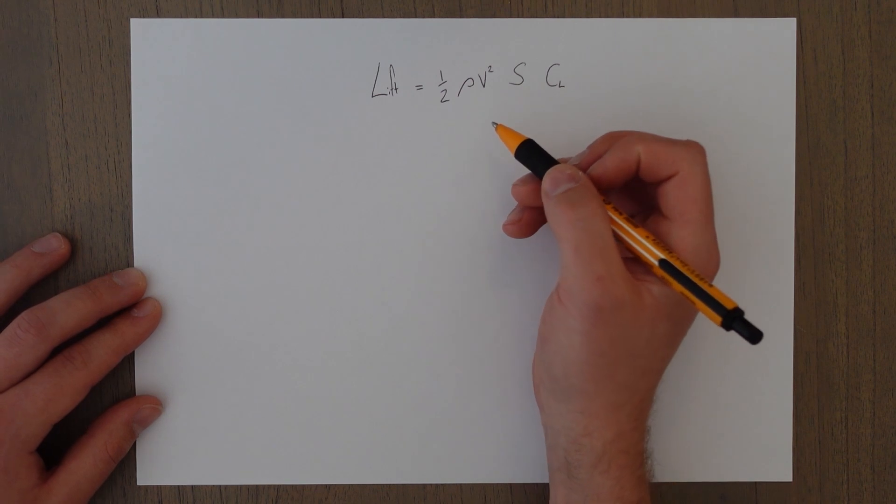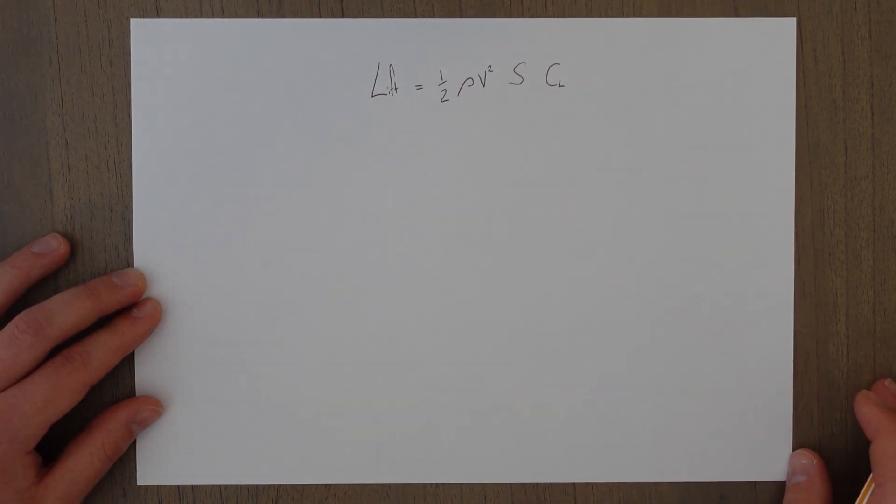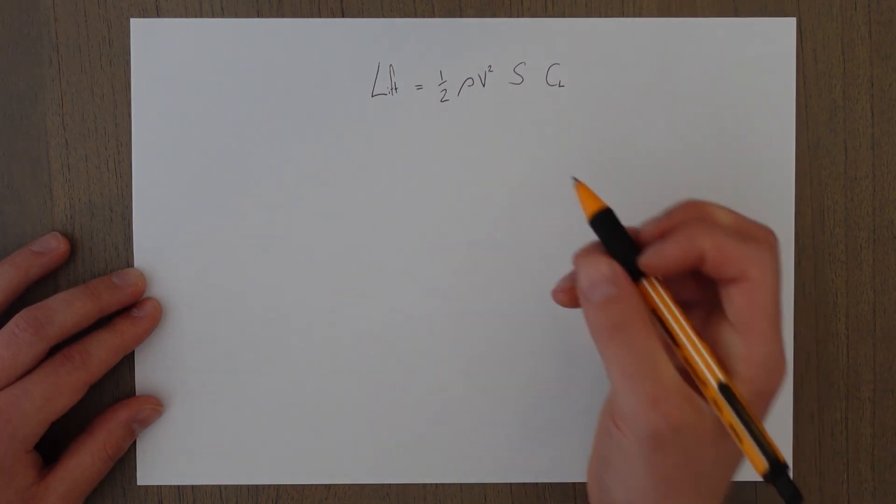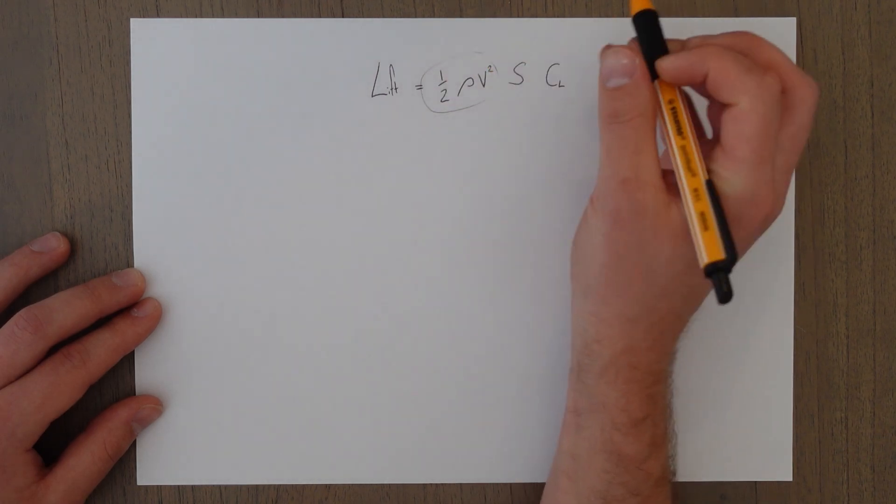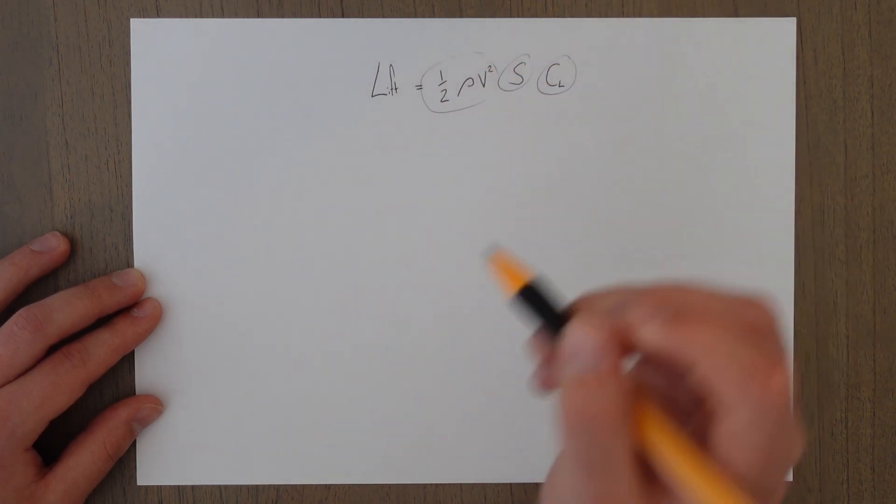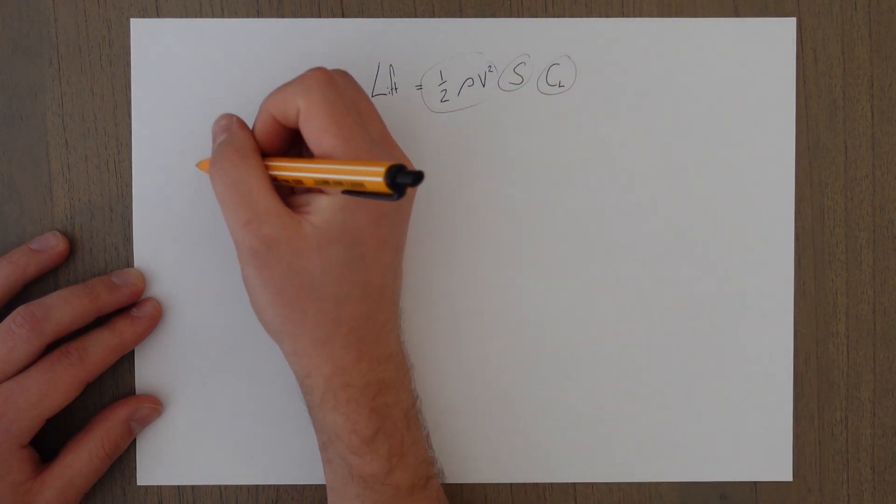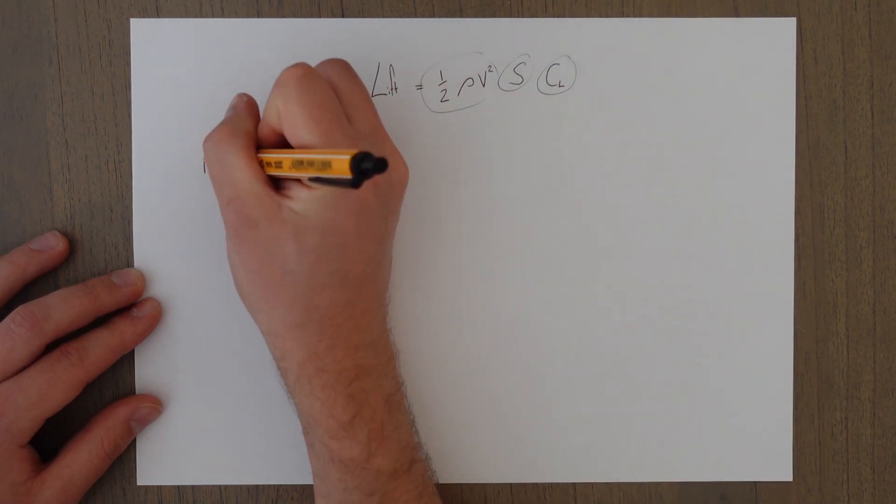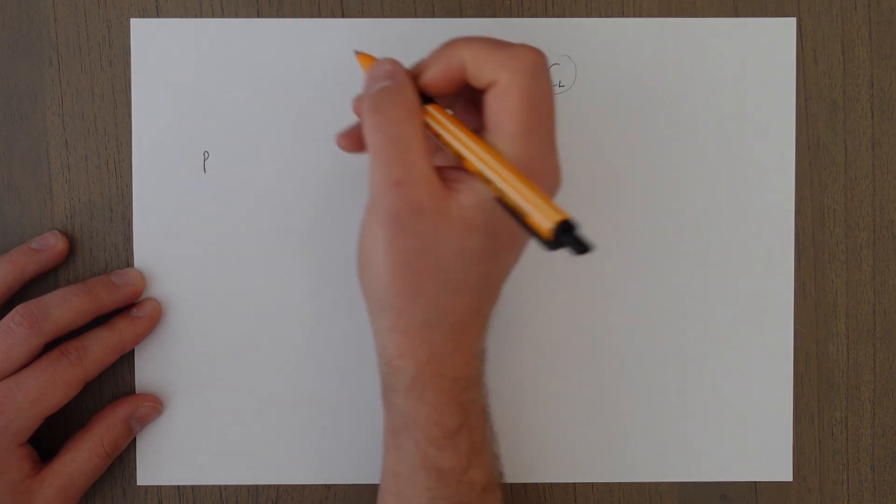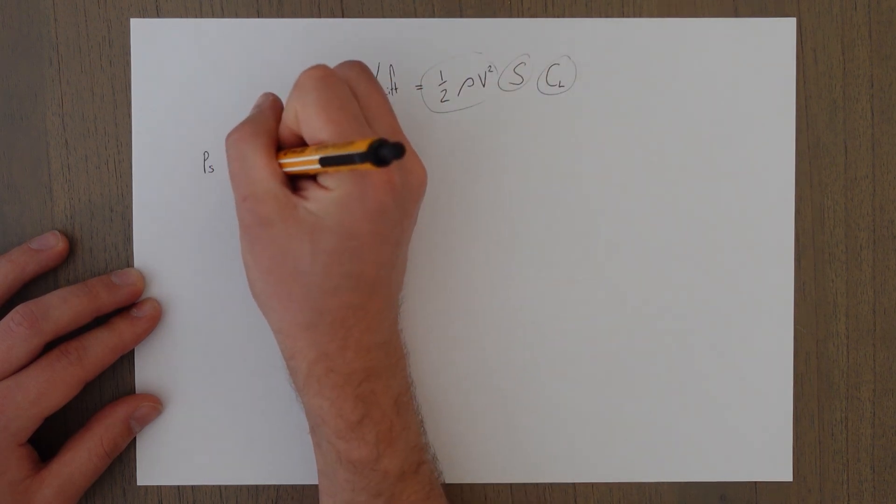In this lift equation we can have an influence over three items: the dynamic pressure, the area, and the coefficient of lift.